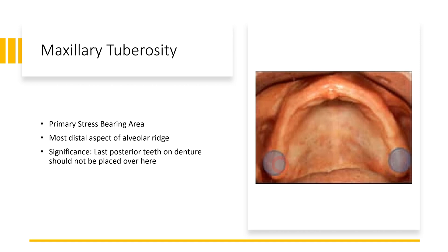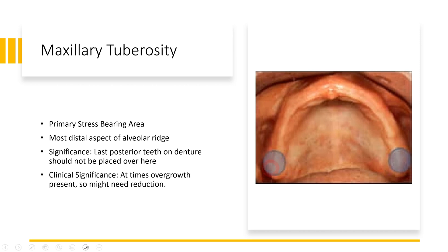So when you place teeth directly over the tuberosity, the patient will not be able to close their mouth. Another clinical significance is that sometimes these tuberosities can be hypertrophied and grow excessively, so before constructing a prosthesis, surgical reduction of the maxillary tuberosity is sometimes required. The main purpose of the maxillary tuberosity, being a primary stress bearing area, is that it provides maximum retention and support to create an optimum intraoral prosthesis.